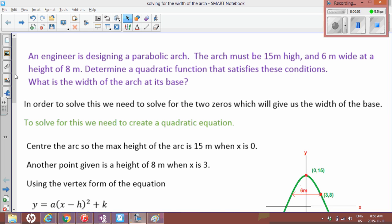So we're going to solve the following question. An engineer is designing a parabolic arch. The arch must be 15 meters high and 6 meters wide at a height of 8 meters. Determine the quadratic function that satisfies these conditions, and then we're going to answer what is the width of the arc at its base.